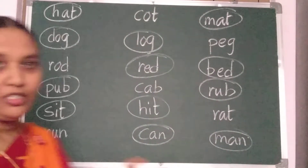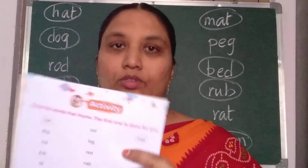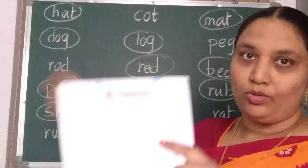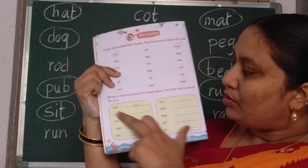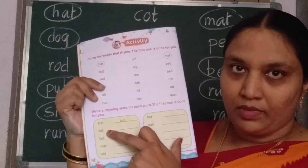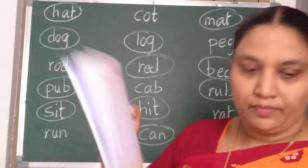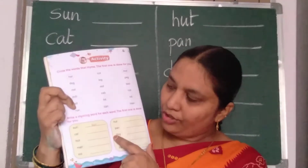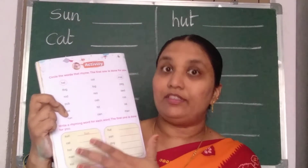Understood children? Last two letters should be same. Like this you should do this bit. After that, the next one — here, what you should do? You should write the rhyming words for the given words.